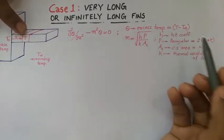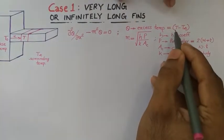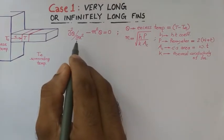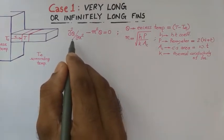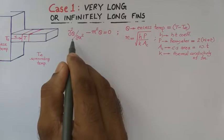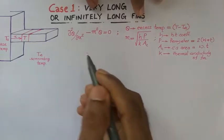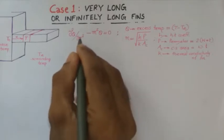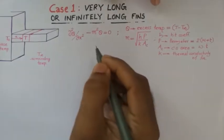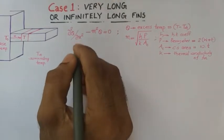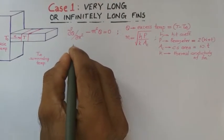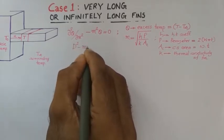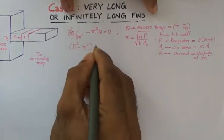Theta is equal to t minus t-infinity. The value of theta at any location is obtained by solving this equation. This is a second-order homogeneous differential equation, and we can find the solution, expressing theta as a function of x. The solution is found by solving the auxiliary equation written using the differential operator D: D² minus m² of theta equal to 0, where D stands for d/dx.